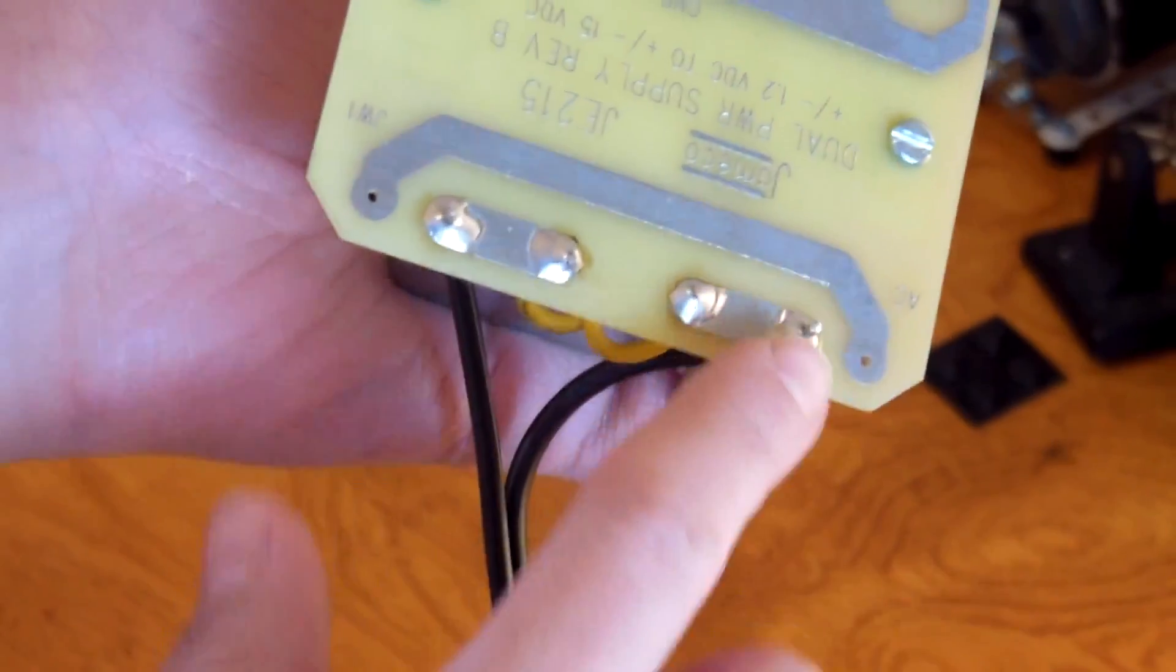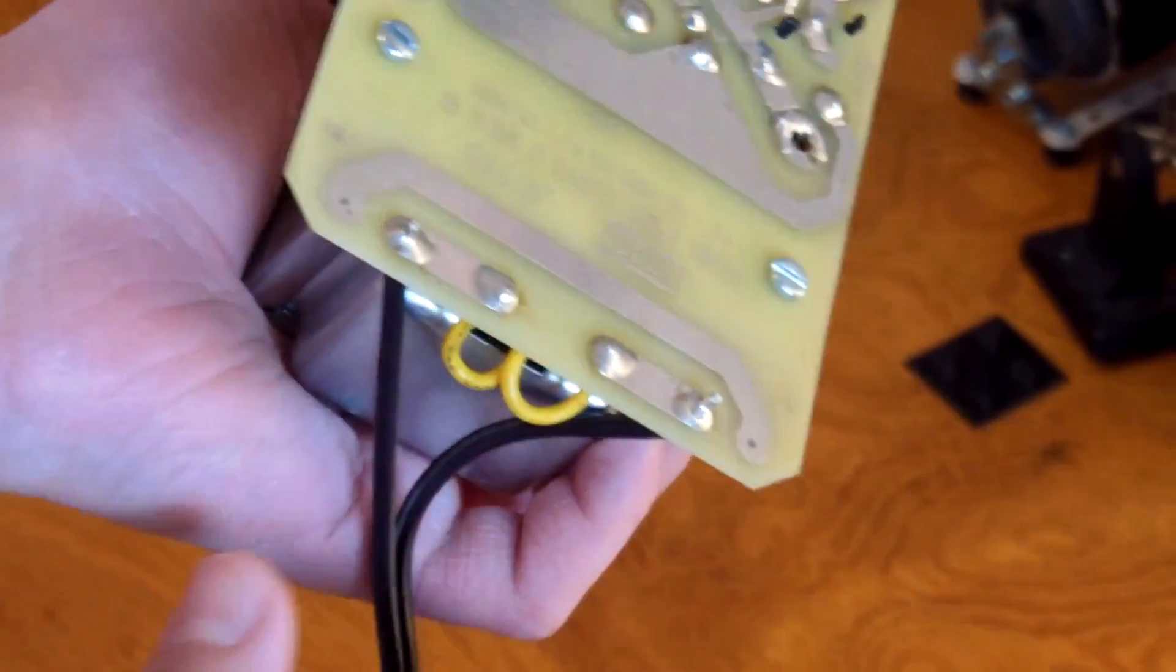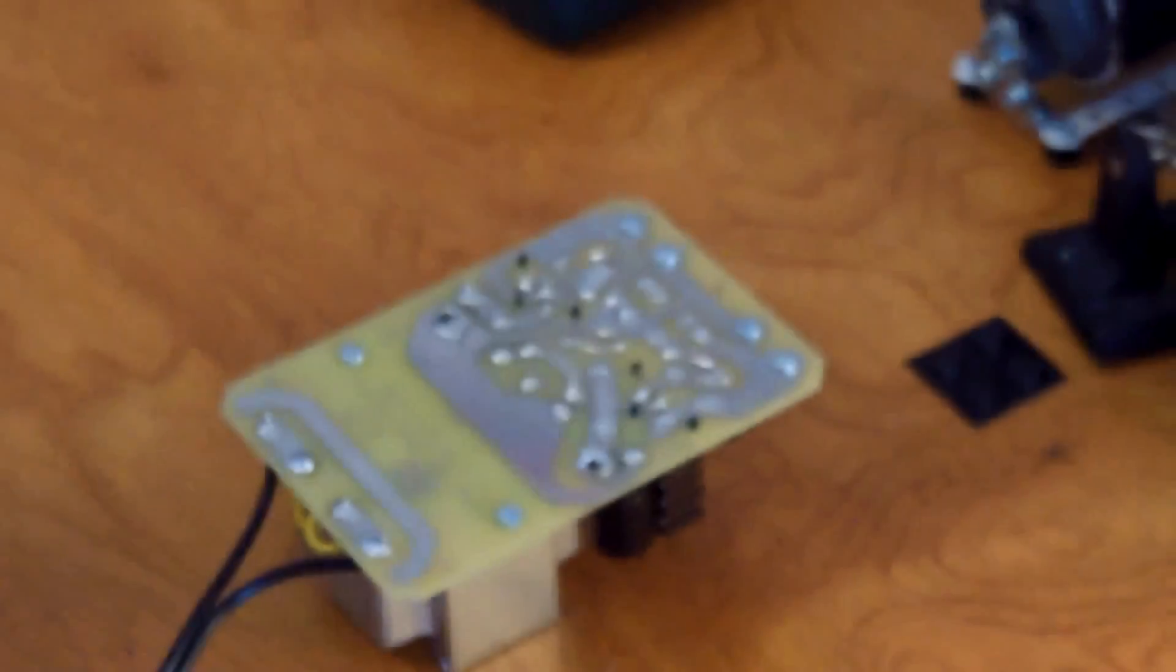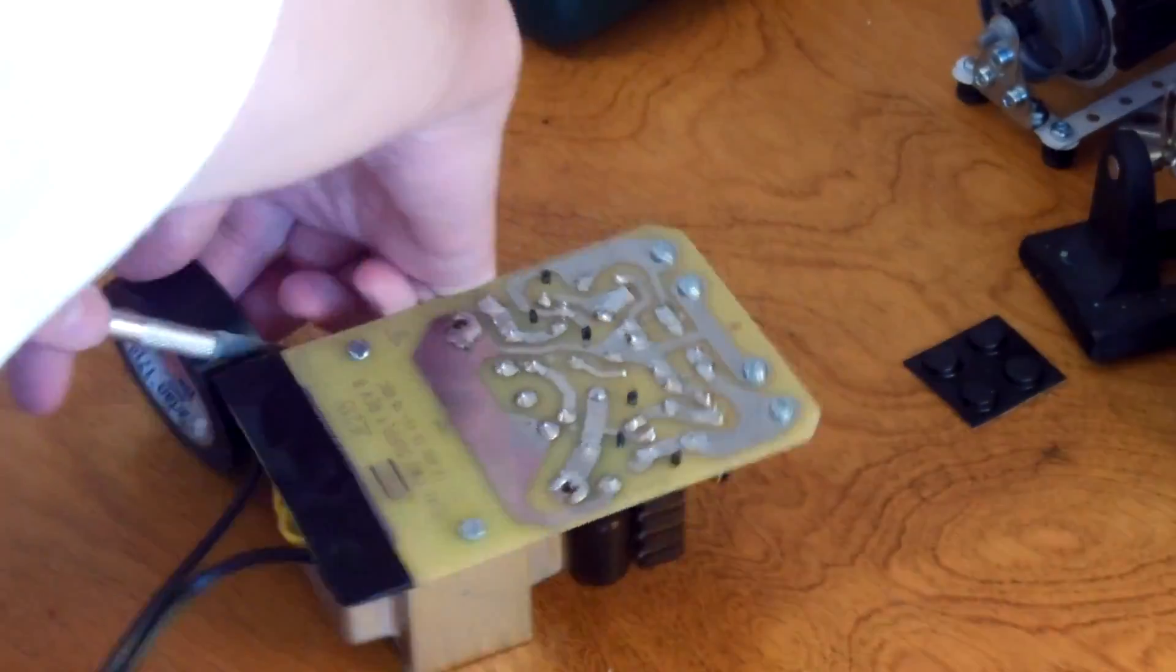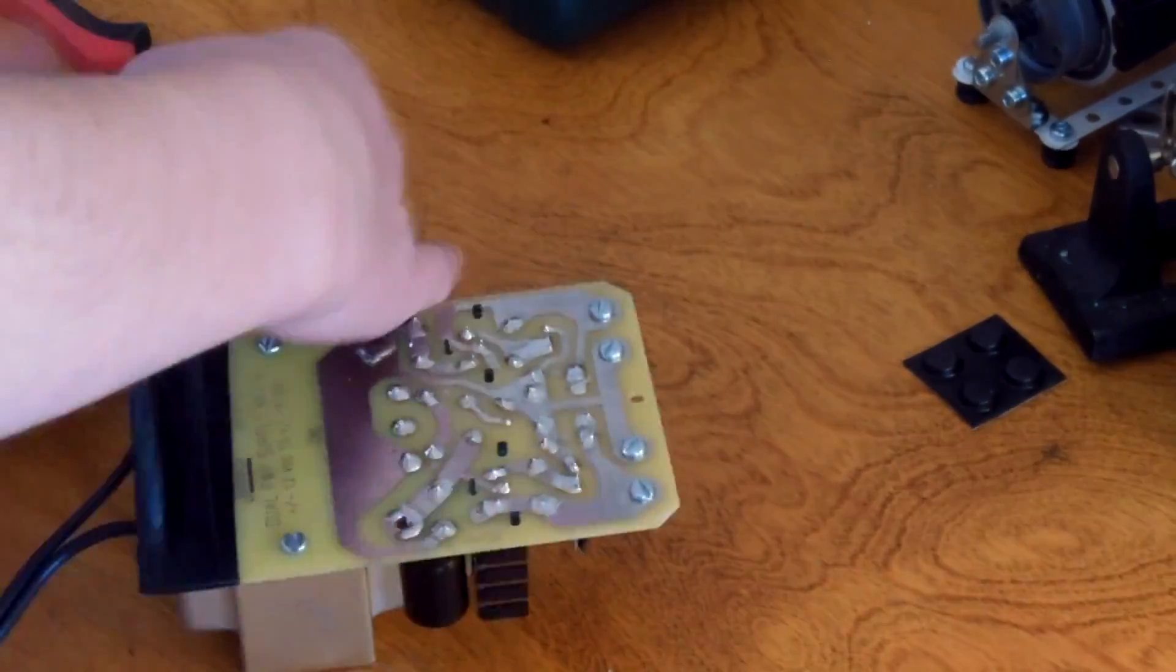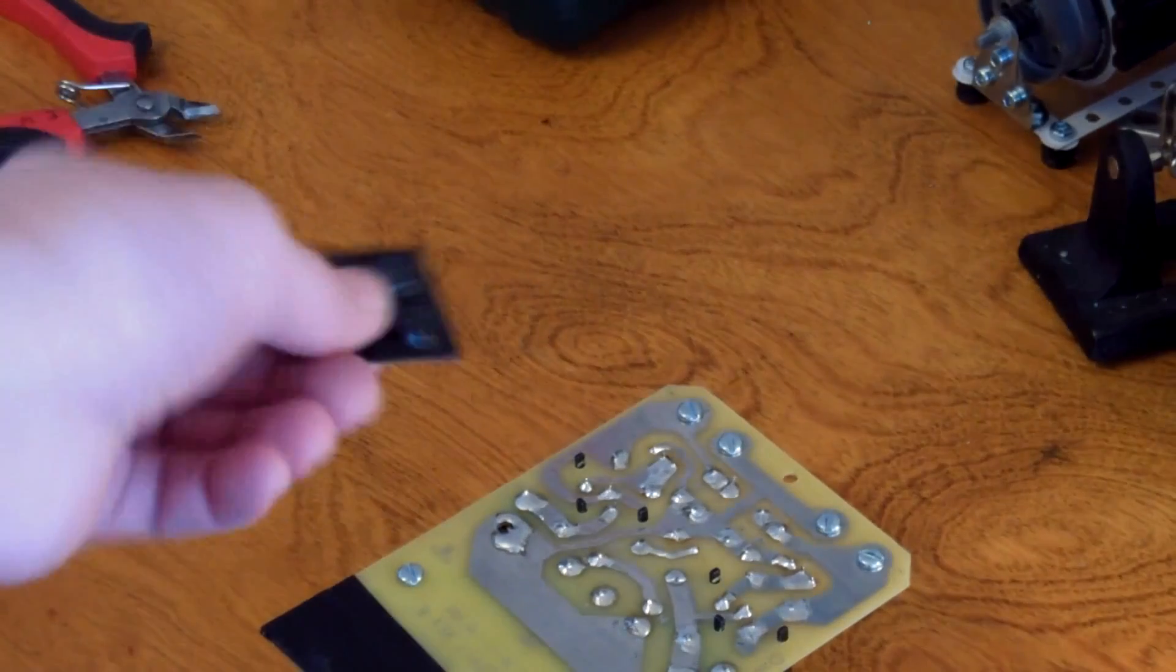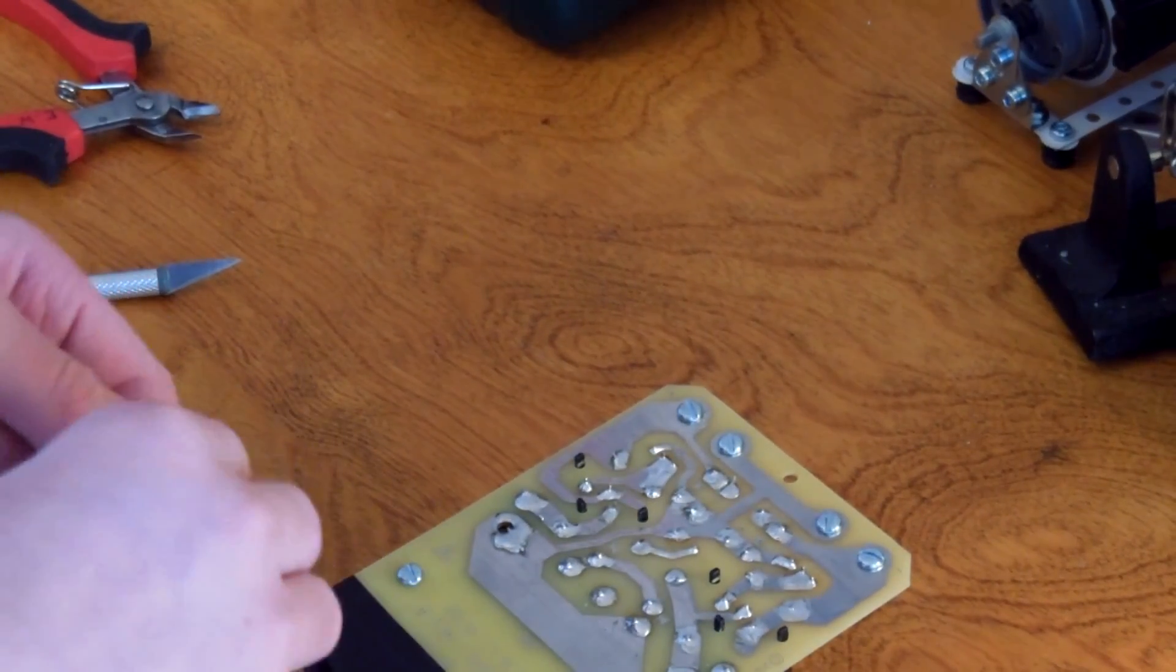Now as it sits currently, this is quite dangerous, because if you touch one of these, you could get a pretty bad shock. So what we're going to do is, to prevent getting shocked, I have some electrical tape here. Now we can put these rubber feet on here, and this will just prevent the power supply from sliding around.